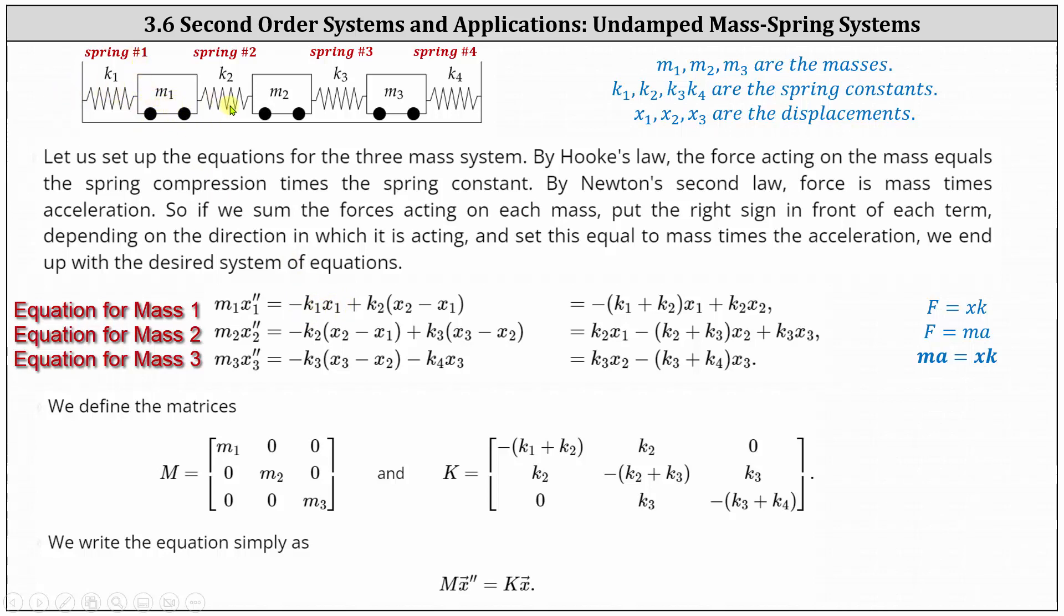And as mass one moves to the right, notice spring two is compressed, and therefore the force is going to be to the right, giving us a positive force, given by the spring constant K2 times the spring compression, given by the difference of X2 and X1.